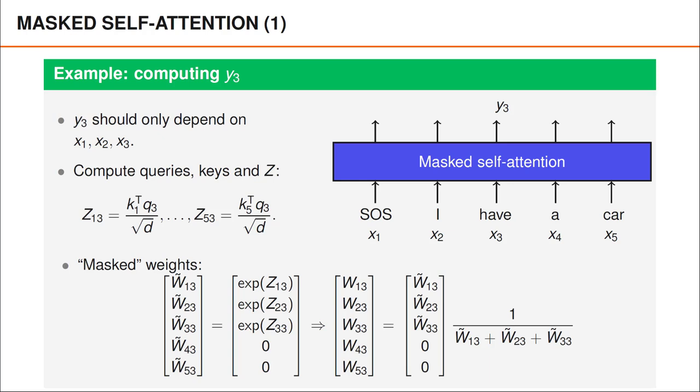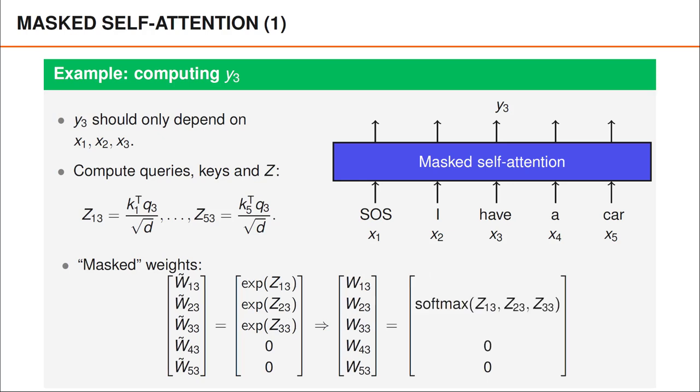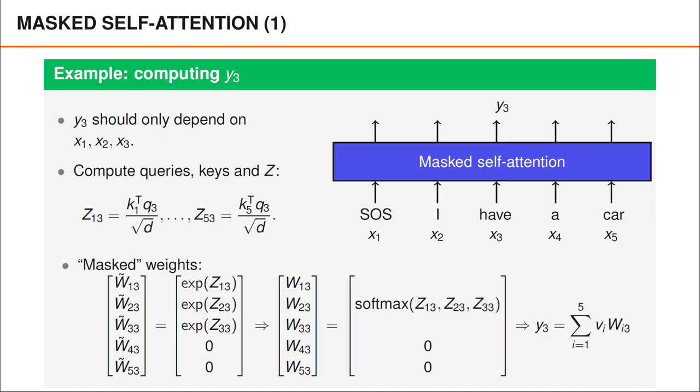However, if you look closely, it's easy to see that the operation that we perform here actually corresponds to taking a softmax with respect to z13 to z33. We can therefore simply write this as follows, where the first three elements are given by the softmax, whereas the final two elements are zero. As you can see, we never actually use z43 and z53, and it's therefore unnecessary to compute them.